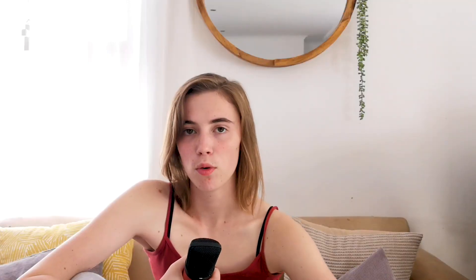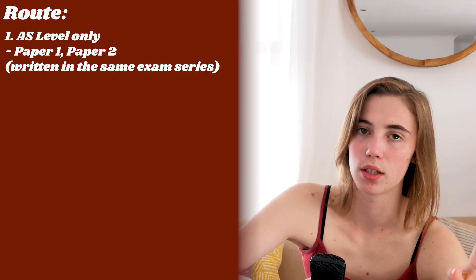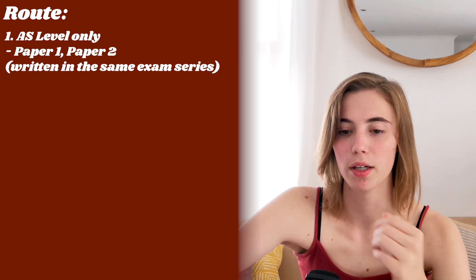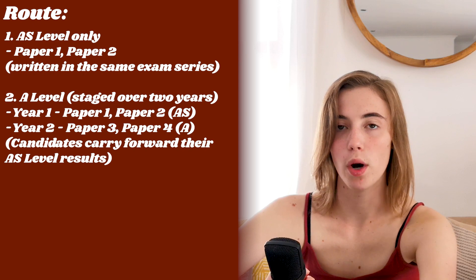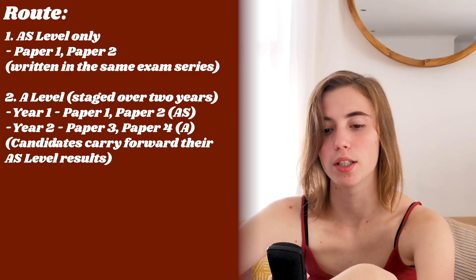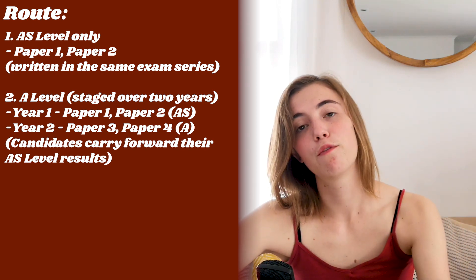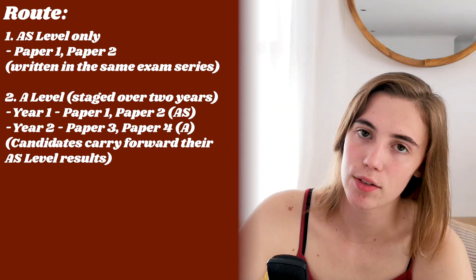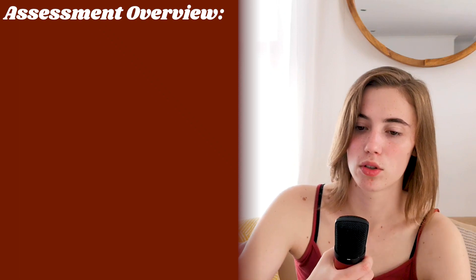The 12th and final topic is software development — the program development life cycle, program design, and program testing and maintenance. Before we jump into the assessment overview, let's talk about the two routes for AS level computer science. The first route is AS only, which is paper one and paper two written in the same exam series. The second route is A level, staged over two years: in year one you write paper one and paper two, and in year two you write paper three and paper four. Your AS level marks carry forward and affect your A level marks.